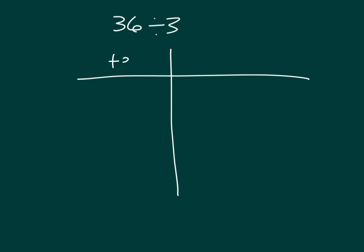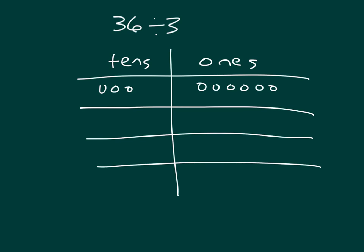Here we have 36 divided by three, so we have tens and ones for the number that we are dividing. 36 is three tens and six ones. We're dividing by three, so we're going to make room for three groups below — one group, two groups, and three groups.